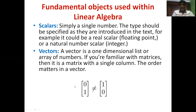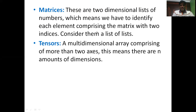An important thing to understand regarding vectors is that the order of elements is important. A zero-one vector is not the same as a one-zero vector because the order of elements is different. Even though the elements are the same, the order matters. A matrix is nothing but a two-dimensional list of numbers. A tensor is a multi-dimensional array comprising more than two axes — there may be many dimensions in tensor data, and you can use it as a collection of matrices. These are the basic definitions before we go through the list of operations performed on these fundamental objects.